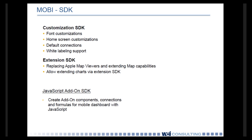Mobi is also shipped along with an SDK for a number of different things: font customization within the mobile application, home screen customization, and default connections. It's also going to replace the Apple Map Viewer, which is present in the current iteration of the app, so that it will extend the mapping capabilities. You can also do certain things to allow charts via the SDK as well. This SDK, along with all the SDKs inside the CMC, BI Launchpad, and Web Intelligence, are RESTful web apps. They're no longer the .NET version available in 4.0 and 3.1, giving a bit more flexibility and compatibility across devices.